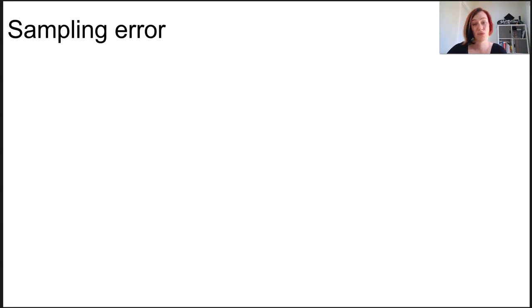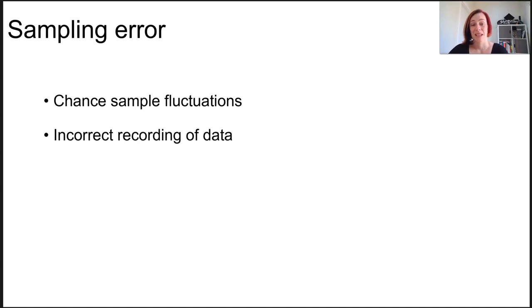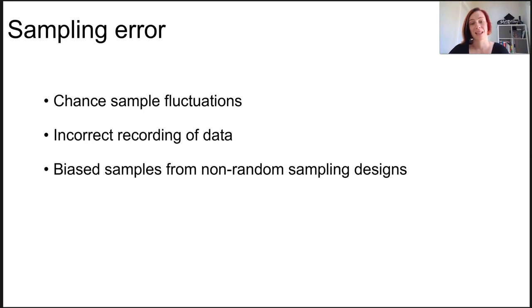Some types of errors you really can't control too much. You might get chance sample fluctuations or clump distribution. Incorrect recording of data is something that can be controlled, obviously. Biased samples from non-random sampling designs - that sampling design really needs to be sorted out early.